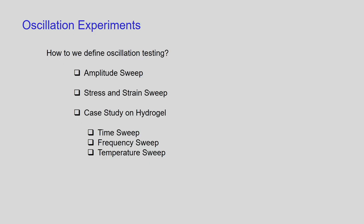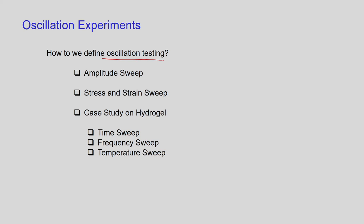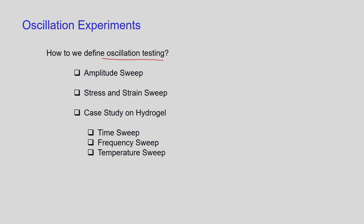What do we cover here? First, with a rheometer: we define oscillation testing. Oscillation testing is where you send a sine wave in the form of strain and record the response in the form of stress. If they are on top of each other, they are in phase; if they lag, we define a lag angle alpha. We will cover amplitude sweep, stress and strain sweep, and then the case study on hydrogel. There is also time sweep, frequency sweep, and temperature sweep.